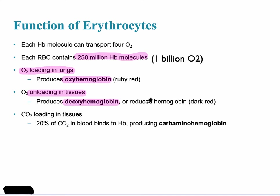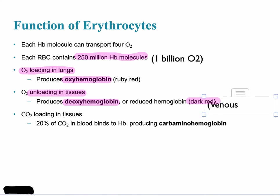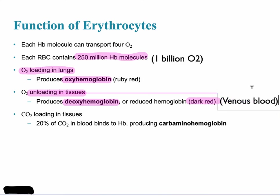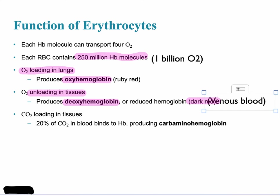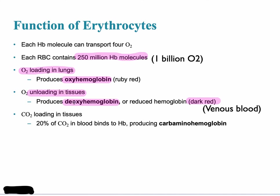At the point of unloading, deoxyhemoglobin — reduced hemoglobin — is formed, and the blood becomes a dark red color. That's what is found in the venous system. Arterial blood is a bright red color, while venous blood is dark red. Carbon dioxide is simultaneously loading in the tissues, doing the opposite of the oxygen unloading.